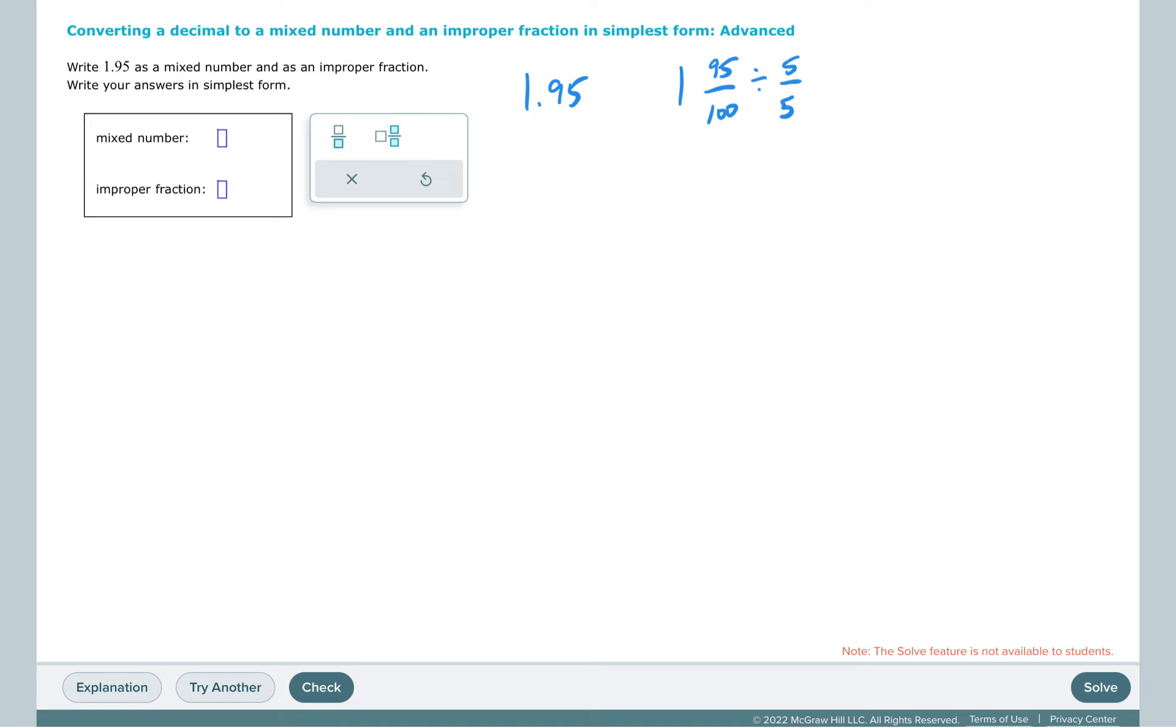In this case, it is necessary because 95 and 100 both share a common factor of 5. We are dividing by one whole, so we know we're not changing the fraction, we're just finding an equivalent fraction. 95 divided by 5 is 19, 100 divided by 5 is 20, and 19 is prime and doesn't share any common factors with 20 other than 1.